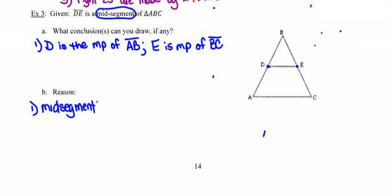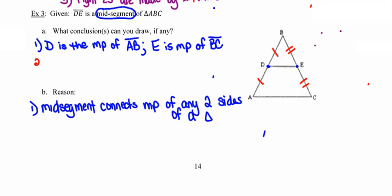A mid-segment joins the midpoints of any two sides of a triangle. And if those fellows are midpoints, then I know that segments AD and DB are congruent. And I know that segments BE and EC are congruent. And that's because a midpoint makes two congruent segments.